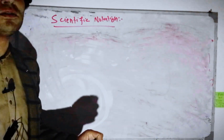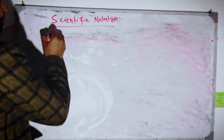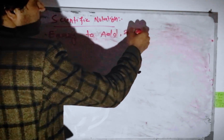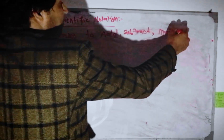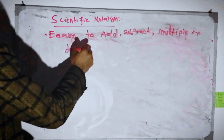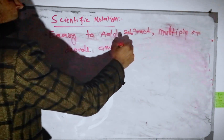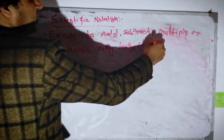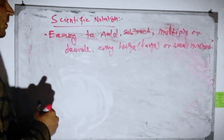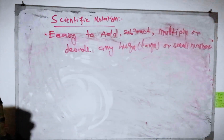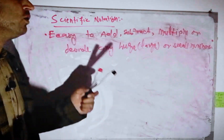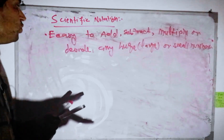The scientific notation makes it easy to add, subtract, multiply, or divide any number — whether huge, large, or small. Whenever we start writing numbers in scientific notation, we follow the same process.